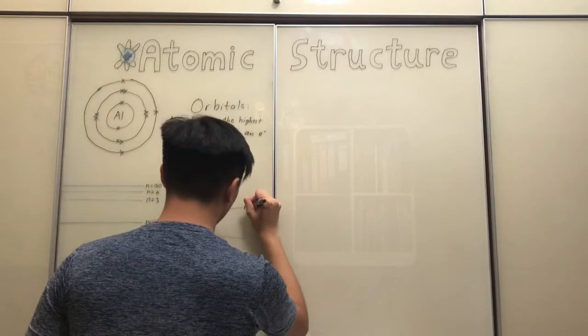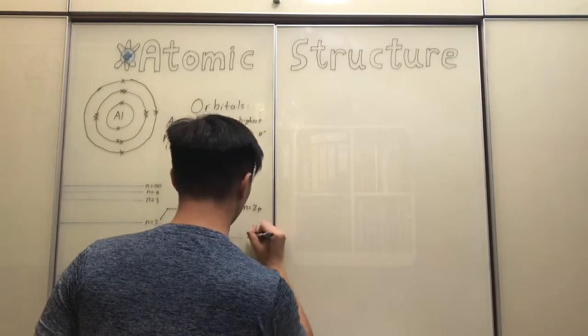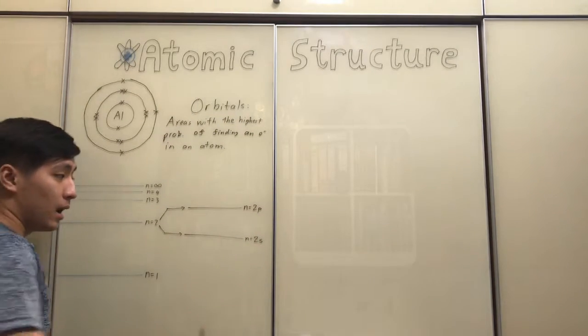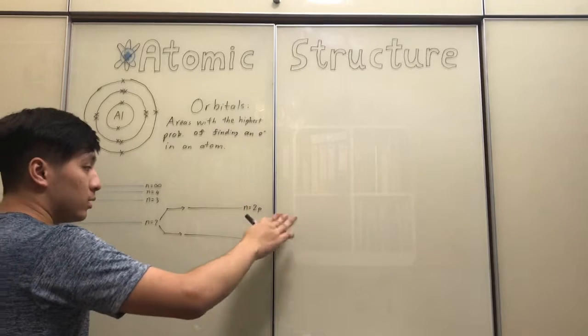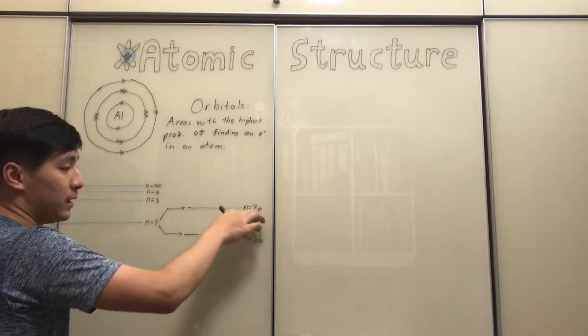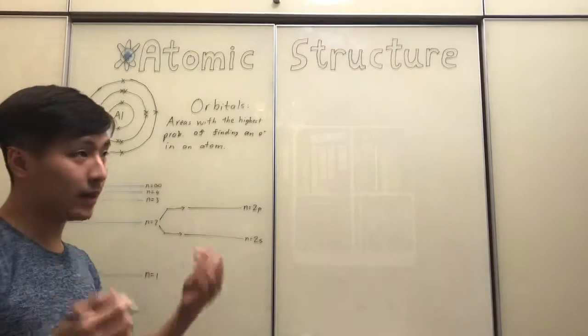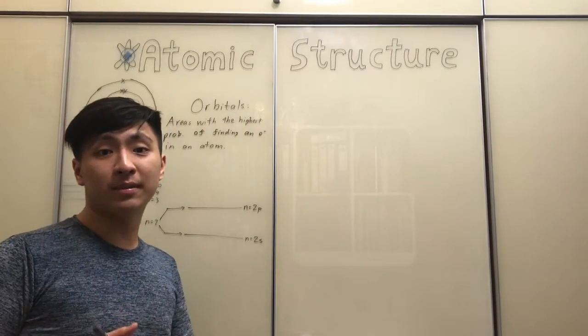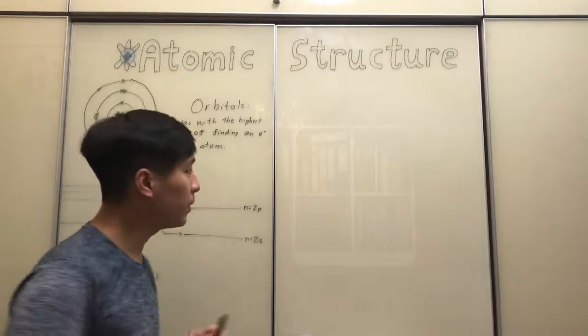So, here we have the orbital n equals 2p, and the orbital n equals 2s. So, yes, and you might be wondering why I just call them s and p, not a and b. Because that's basically the way it's named. So, this part, unfortunately, there isn't really an explanation for it, you just need to memorize this part.